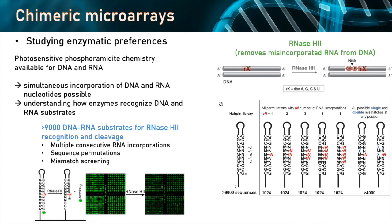We did all possible base pairs in that section, as well as all possible single RNA insertions and consecutive RNA incorporation up to five, to see if there are differences depending on how many RNA inserts you have. We also tested the introduction of mismatches to see what happens and which mismatches make it harder for the enzyme to cleave. The way we monitor cleavage is by placing a dye at the 5' end of our hairpin. After a single assay with RNase H2, we monitor the loss of fluorescence, which tells us about the efficiency of cleavage. We do indeed find that there is sequence preference.